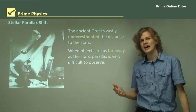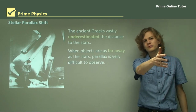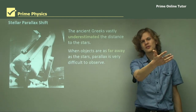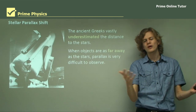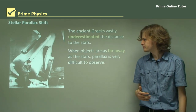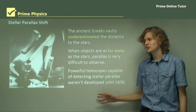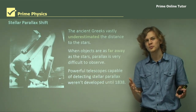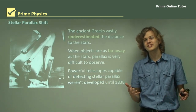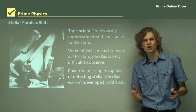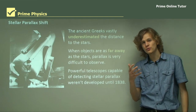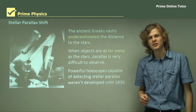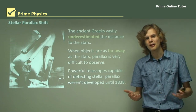When objects are as far away as the stars — the closest one takes four years just to get light to us — parallax is very, very difficult to observe. You could imagine having an arm a few meters long so that when you compare it to the other side of the room, it's almost touching the wall already; there's no way of noticing any parallax. In fact, powerful telescopes capable of observing parallax motion weren't built until the 19th century, and even then they could only just detect the barest shift of the closest stars.